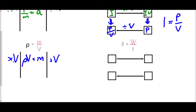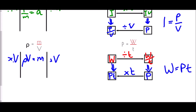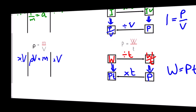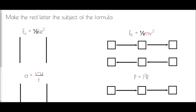In our last example of this set, P = w/t, we're using the flowchart method and we want to make w the subject — so that's where we start. w has been divided by t to give w/t, which equals P. Working backwards, instead of dividing by t we do the opposite and multiply by t, giving Pt. So w = Pt, and we've made w the subject of the formula.